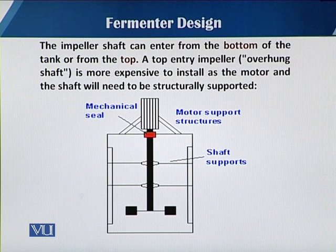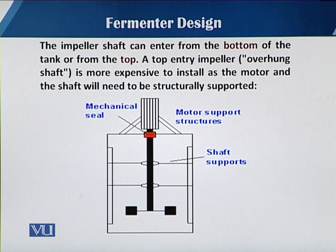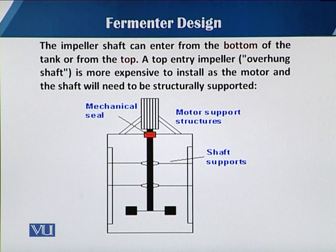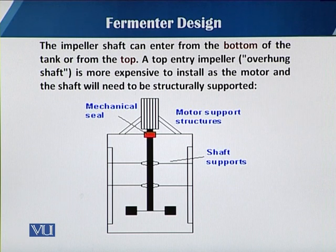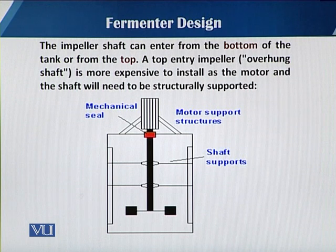When we talk about impellers, we first have to consider the placement of the motor. Sometimes the motor is placed on the top and in some fermenters the motor is attached to the bottom — in both cases the purpose is the same, just to agitate. There are pros and cons for both top and bottom motor configurations. In this diagram you can see that the impeller shaft enters from the top, as the motor is placed on top.